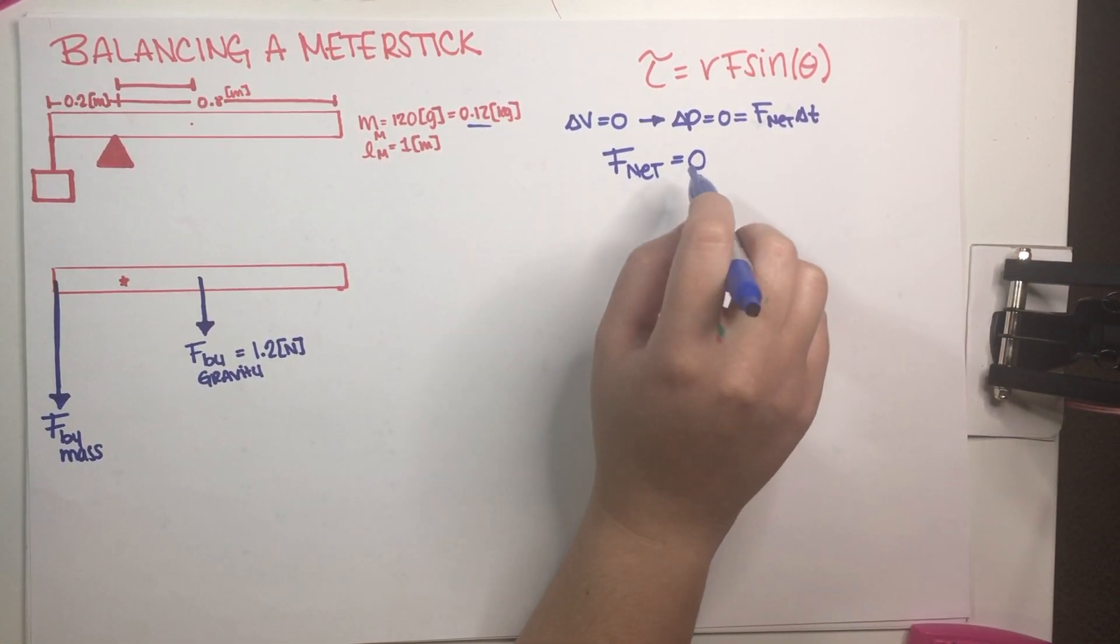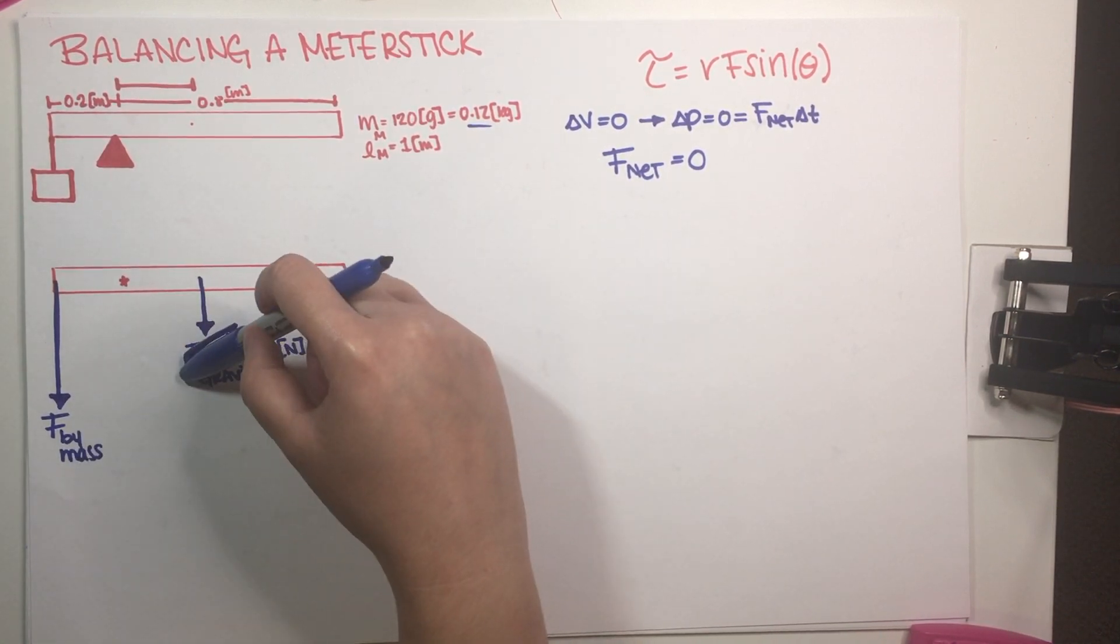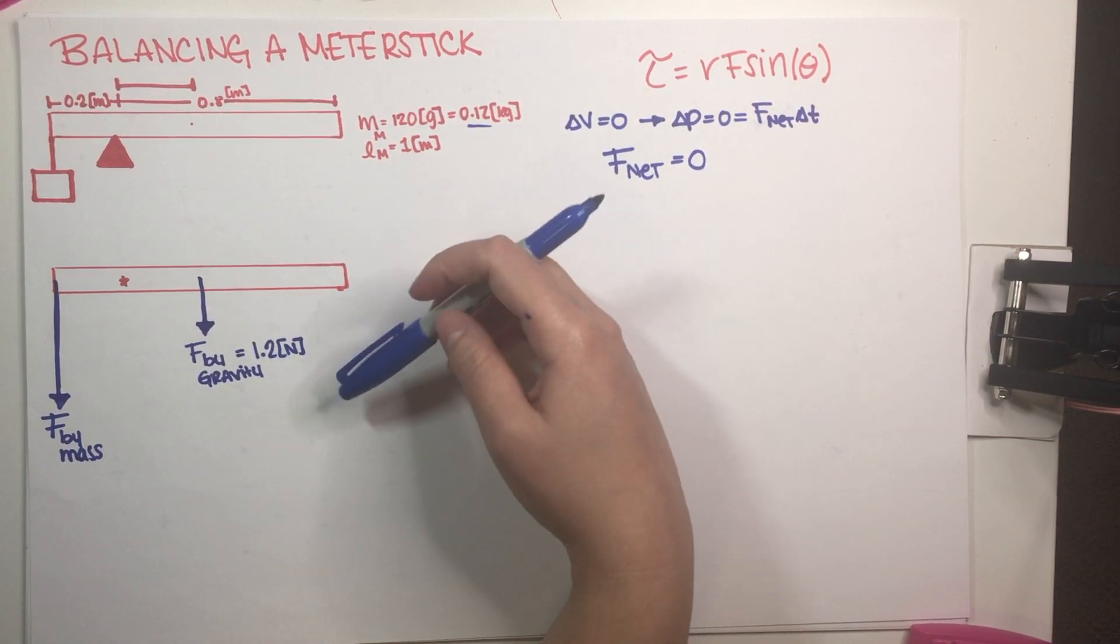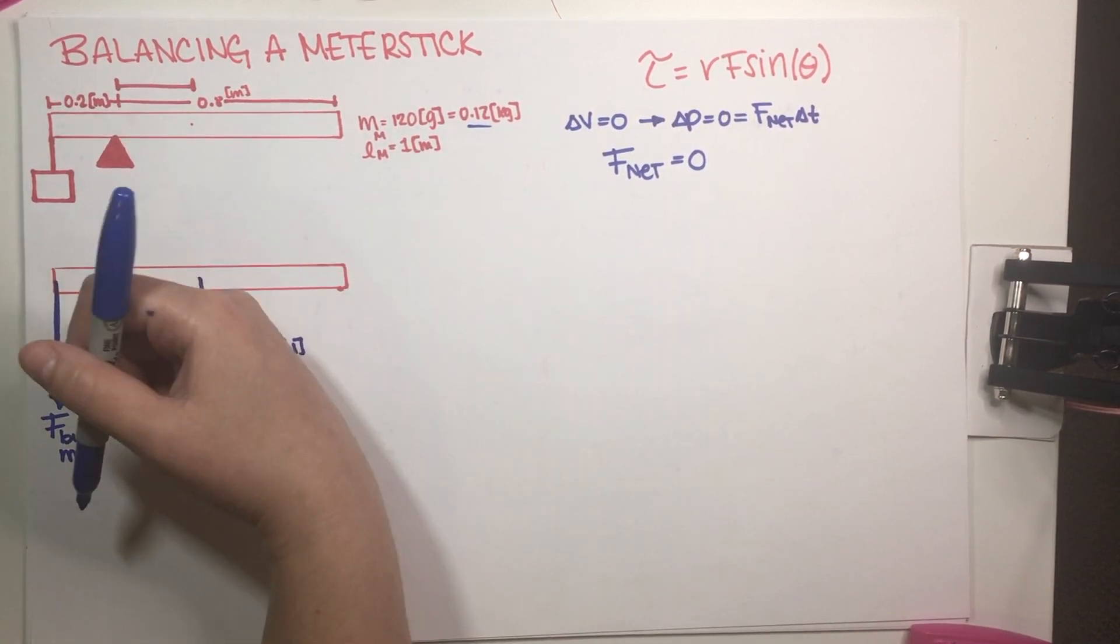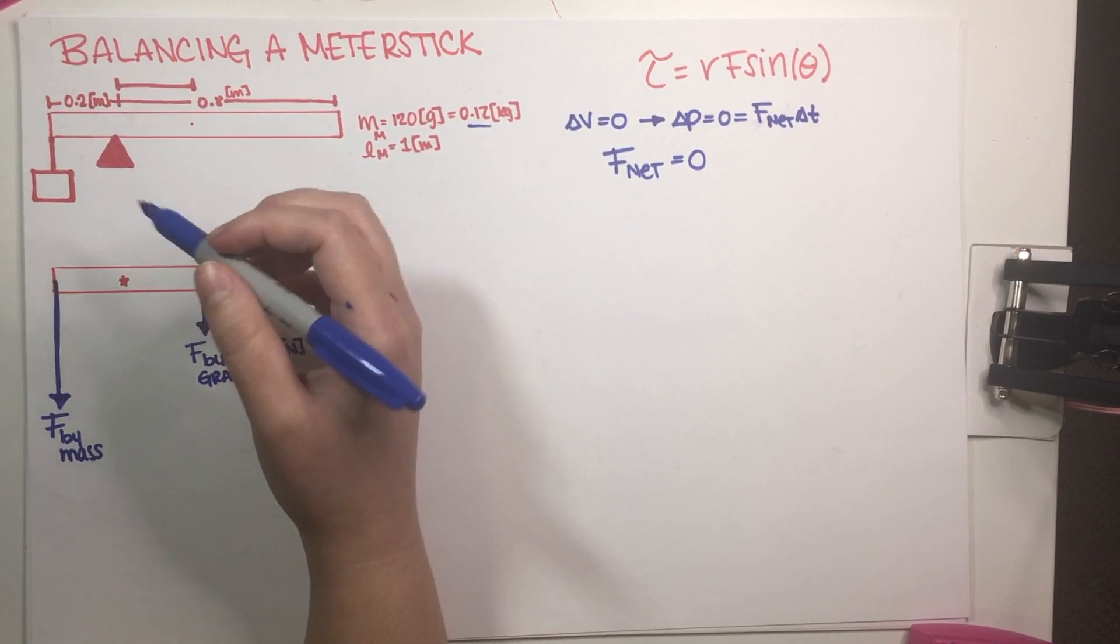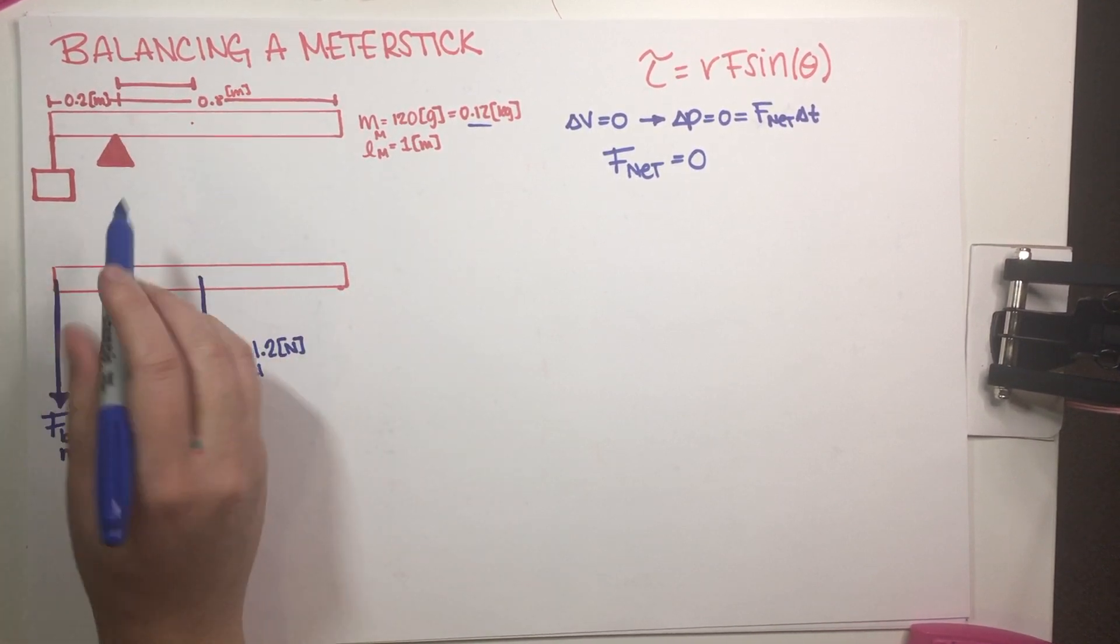Now, as you can very clearly see, this is not the case right now. We do have two forces, but they are going in the same direction, so these two are clearly not going to balance out. So we are missing a third force, which part B of this problem is kind of hinting at as well, because we do have to find it.